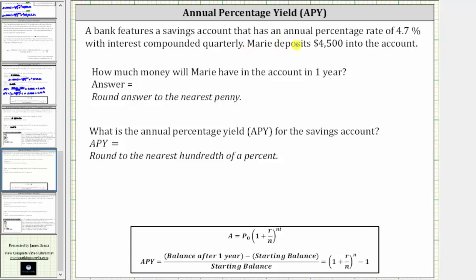A bank features a savings account that has an annual percentage rate of 4.7% with interest compounded quarterly. Marie deposits $4,500 into the account. The first question is: how much money will Marie have in the account in one year? Second, what is the annual percentage yield for the savings account?